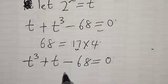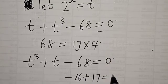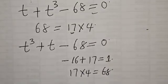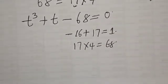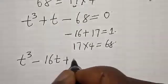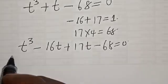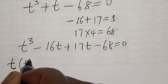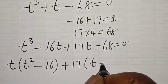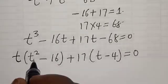In order to get the value of t, since the coefficient of t is 1, we need to write this as minus 16 plus 17, which gives you 1. We know that 17 multiplied by 4 is equal to 68. Then our equation becomes t raised to power 3 minus 16t plus 17t minus 68 is equal to zero. Let's factor t out: we have t into t squared minus 16 plus 17 into t minus 4 is equal to zero.